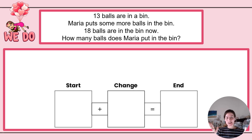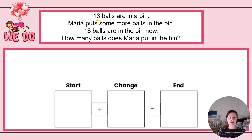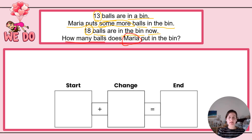All right, assuming you're all ready, here we go. Let's practice we-do time. We are first walking into step one: understand it. So let's read the problem. 13 balls are in a bin. Maria puts some more balls in the bin. 18 balls are in the bin now. How many balls does Maria put in the bin? Let's go ahead and circle and underline what's important to know in this problem. I know that I have 13 balls in a bin. I know that Maria puts some more balls in the bin. However, I don't know how many. I do know that I will end up with 18 balls in the bin now. My question is, how many balls does Maria put in the bin?